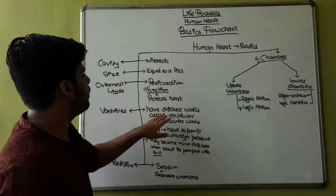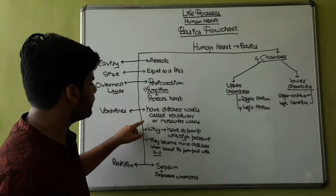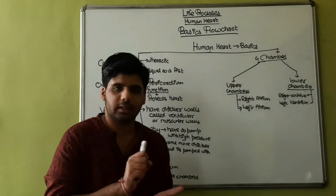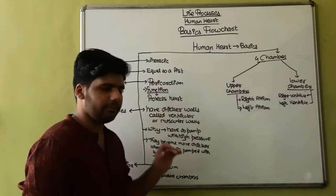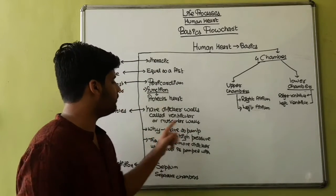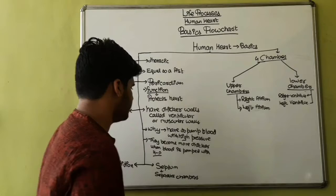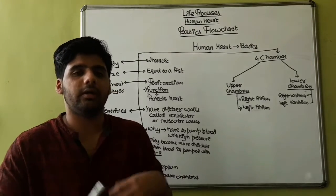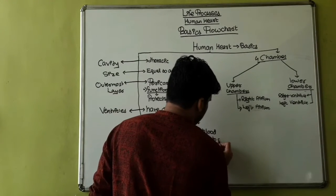Ventricles have thicker and muscular walls. Their function is to pump blood. They have to pump blood with high pressure to other parts of the body.